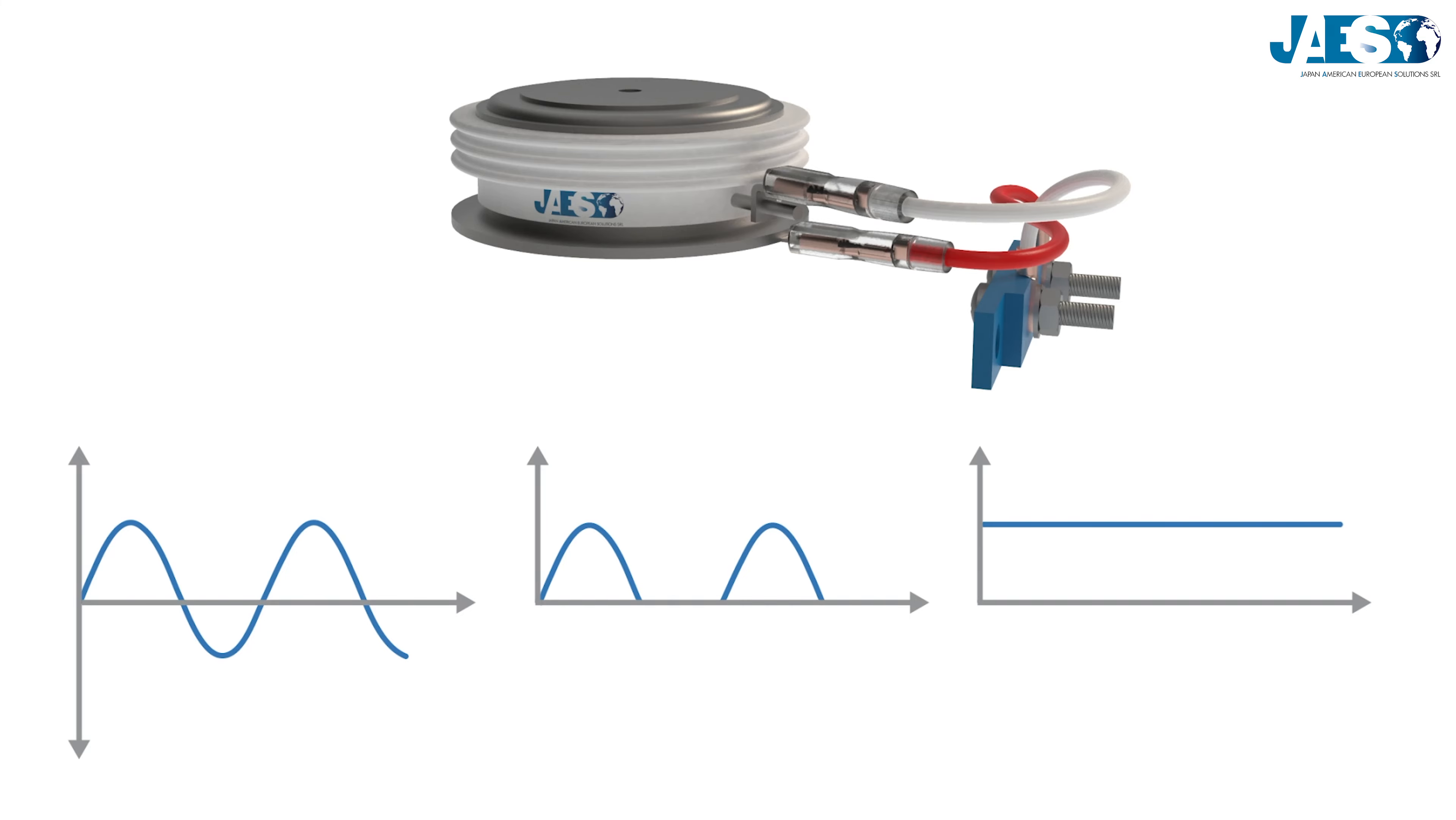Furthermore, by delaying the gate triggering, the thyristor can be triggered at any instant of the positive alternation of the voltage to regulate the intensity of the output current.